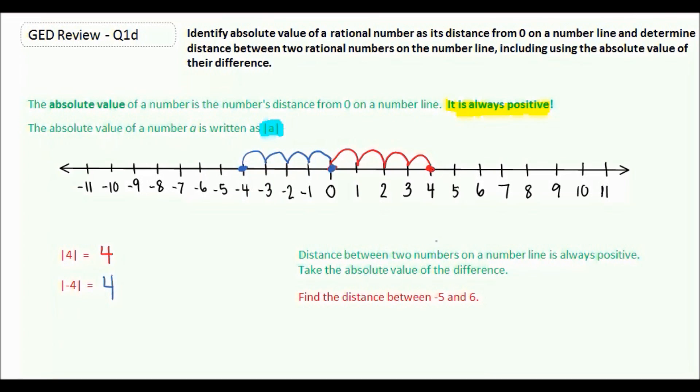Now the distance between two numbers on a number line is always positive. Take the absolute value of the difference.